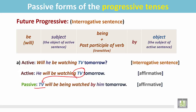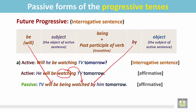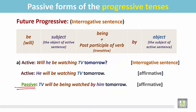TV becomes the subject. Then the auxiliary verb 'will be'. For the progressive tense, we have to use 'being' before the past participle form of the transitive verb. The past participle form of 'watch' is 'watched', followed by the preposition 'by'. The subject of the active sentence becomes the object in the passive: 'TV will be being watched by him tomorrow.'